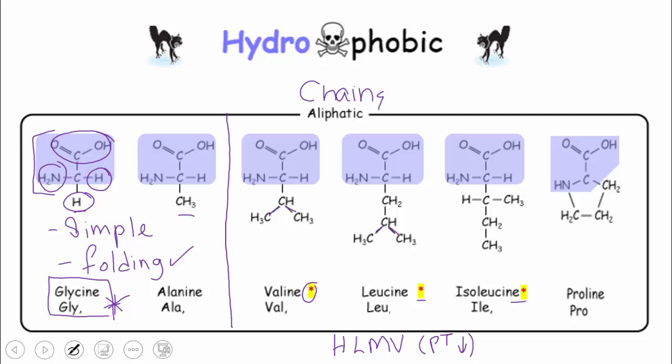Now moving on to the second group, which are the branched amino acids, valine, leucine, and isoleucine. Now the characteristic of those is exactly the opposite to the simple chains. The branched chains are very hard to fold when they are within a protein due to their bulky structure.